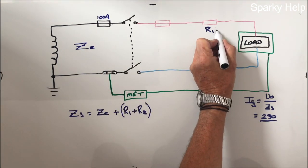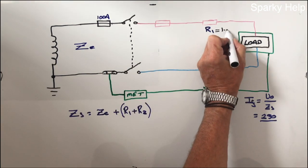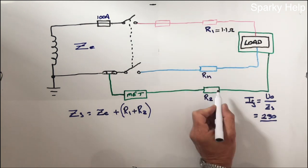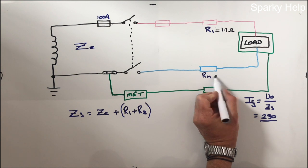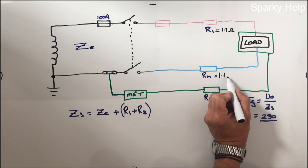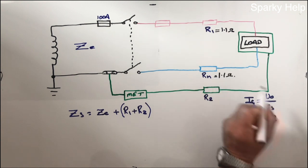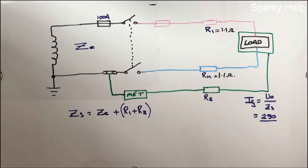Let's give them some values. So because the line conductor is 1.1 ohms, chances are the neutral conductor will also be 1.1 ohms, and if they're the same length, same cable, you'd expect them to be.